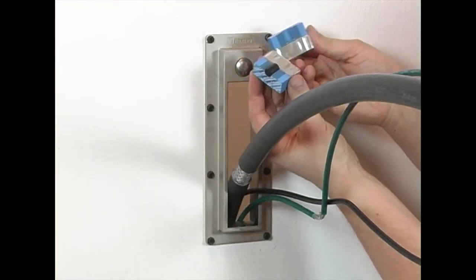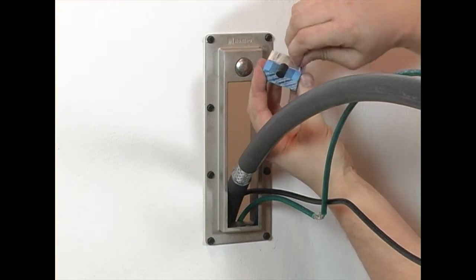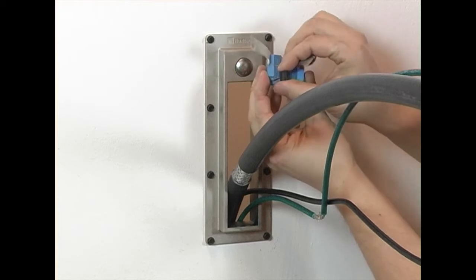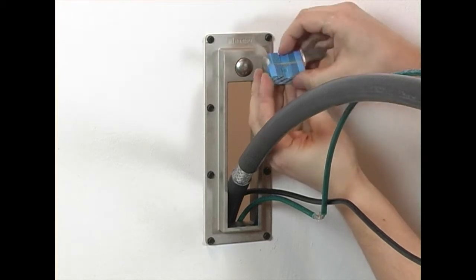Adapt the modules to the correct dimension, both for the cable sheath at one end of the module and for the cable screen at the other. Do this by peeling off layers from each module half.